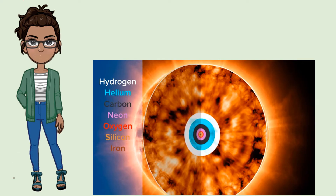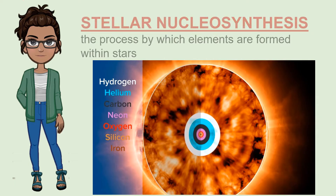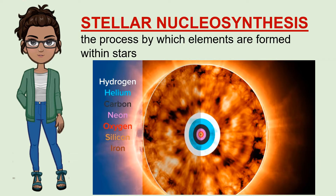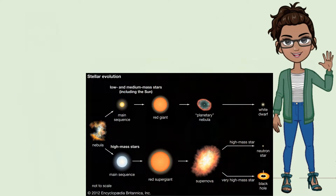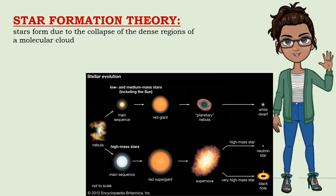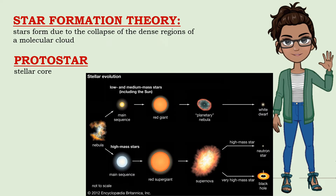Elements heavier than beryllium are formed through stellar nucleosynthesis. Stellar nucleosynthesis is the process by which elements are formed within stars. The abundances of these elements change as the stars evolve. The star formation theory proposes that stars form due to the collapse of the dense regions of a molecular cloud. As the cloud collapses, the fragments contract to form a stellar core called a protostar. Due to the strong gravitational force, the protostar contracts and its temperature increases. When the core temperature reaches about 10 million Kelvin, nuclear reactions begin. The reactions release positrons and neutrinos, which increase pressure and stop the contraction. When the contraction stops, gravitational equilibrium is reached, and the protostar has become a main-sequence star.